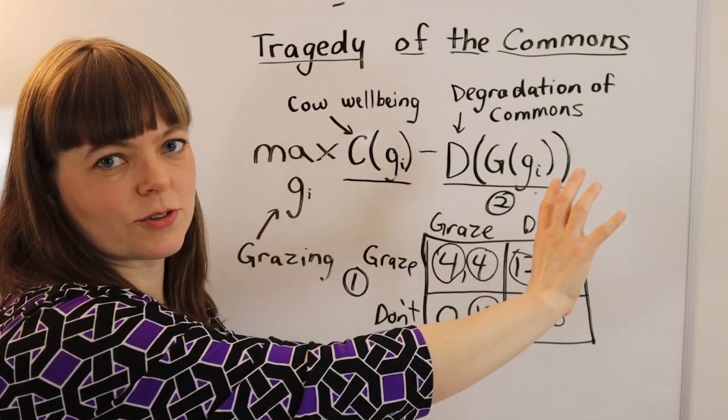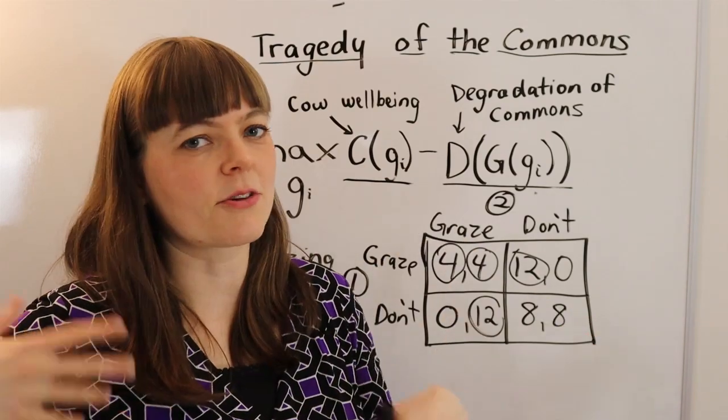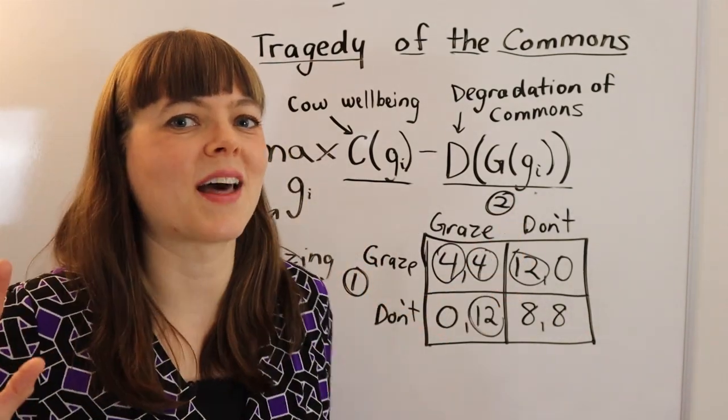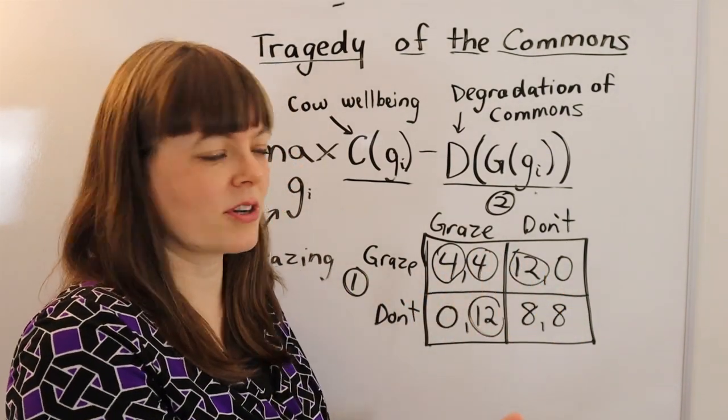According to the optimal solution, if everybody grazed this amount, the grass would replenish at the right rate. We could figure that out. We could actually solve that. I won't do that here, but we could. And in which case, it's definitely a prisoner's dilemma.